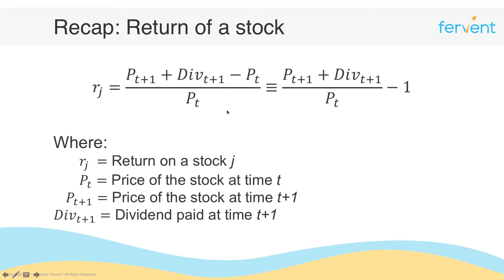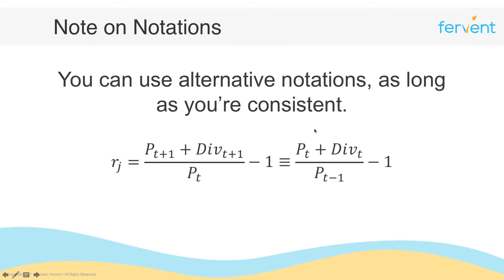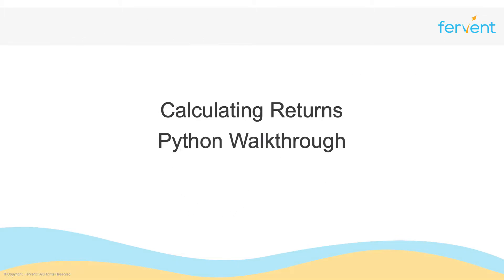Just one last thing before we use this with real-world data: remember that you can always use alternative notations as long as you're consistent. So the return on stock j can be written as p(t+1) plus div(t) over p(t) minus 1, or equally as p(t) plus div(t) over p(t-1) minus 1. Either notation works — p(t+1) is one period forward and p(t) is one period before. As long as you're consistent, both are fine. Let's go ahead and apply this formula with some real-world data.